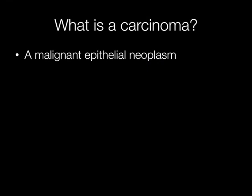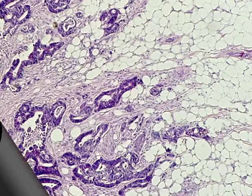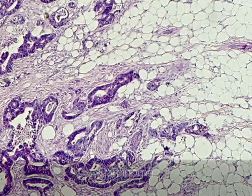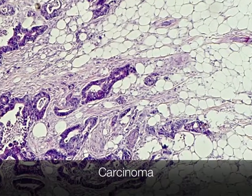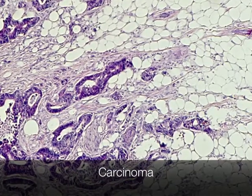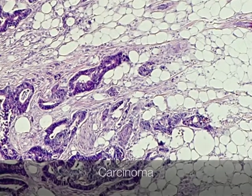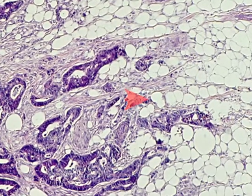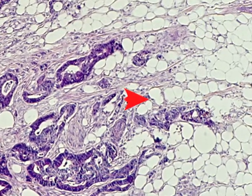A carcinoma may simply be defined as a malignant epithelial neoplasm. This is an example of a carcinoma, and you can see it's infiltrating the fat.